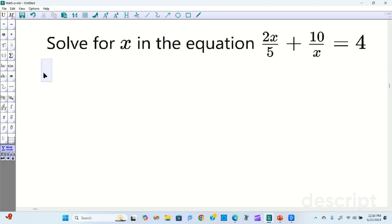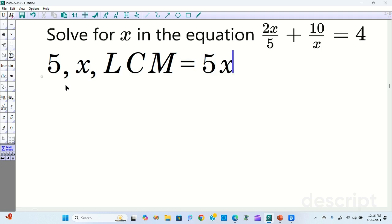So we have this equation to solve. First thing you want to observe is that 5 and x are two different things. They're distinct. This means the LCM is 5 times x. We want to identify that because then we can multiply by it every single term.